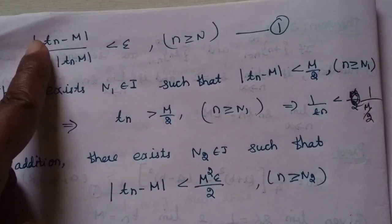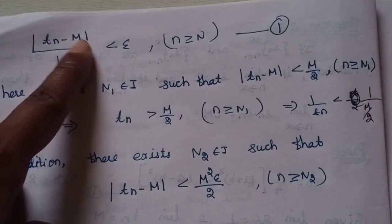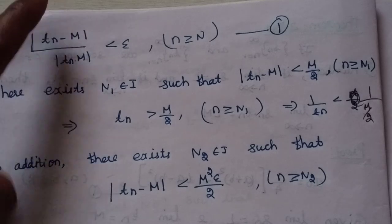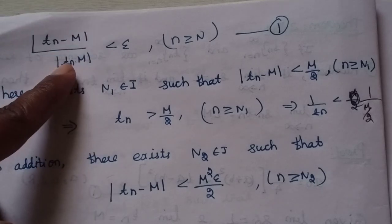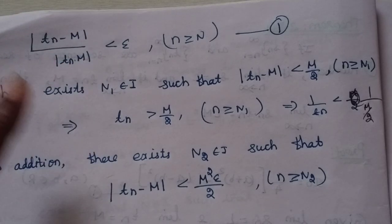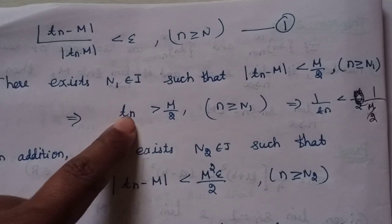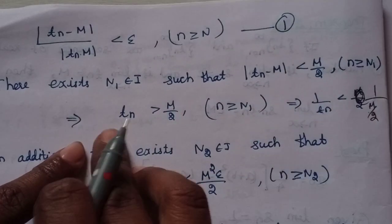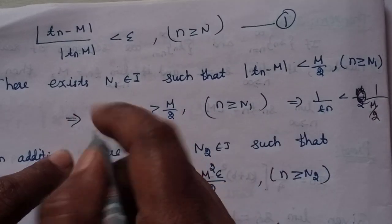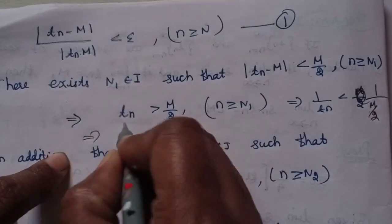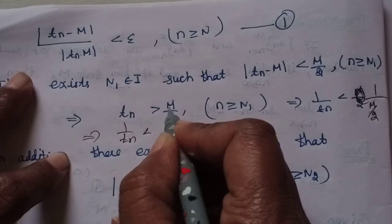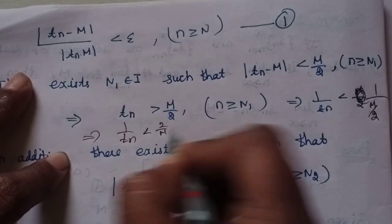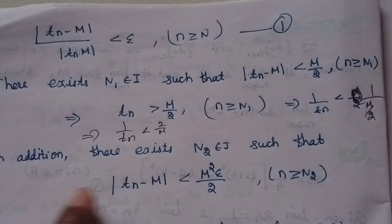In the first condition, tn greater than m by 2. This implies, reciprocating on both sides, 1 by tn is less than 2 by m. So in addition we have this bound.